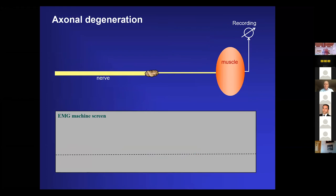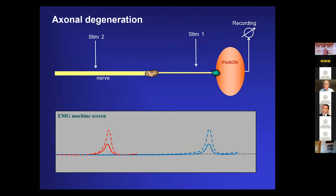When we have axon loss, for instance due to a traumatic lesion, stimulating distally gives a lower-than-normal response because fewer axons go to the muscle. Stimulating proximally gives the same small response, but conduction velocity is normal — this is what we call axonopathy, loss of motor axons. However, the decrease in compound muscle action potential can be caused by other mechanisms as well. What happens in critical illness myopathy is that you typically also have a less excitable muscle membrane, and this is the reason why these patients have been misdiagnosed as a motor axonopathy.